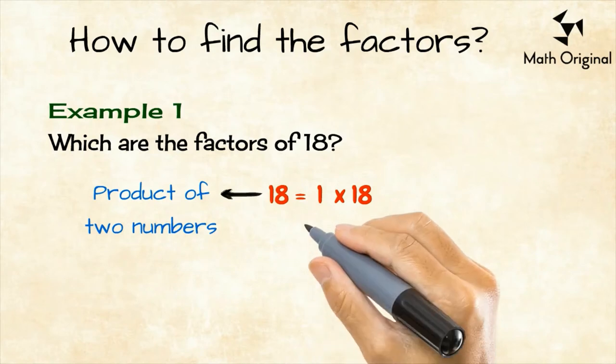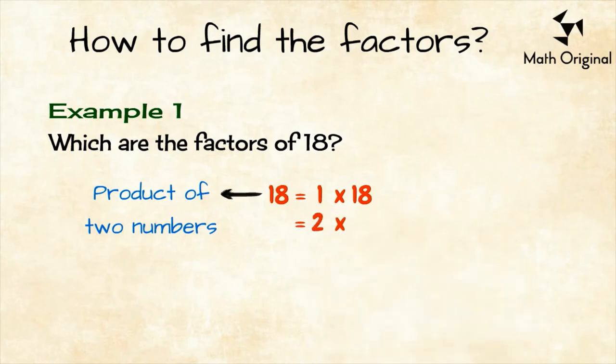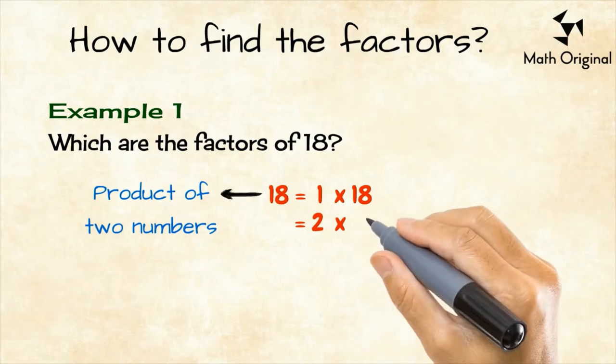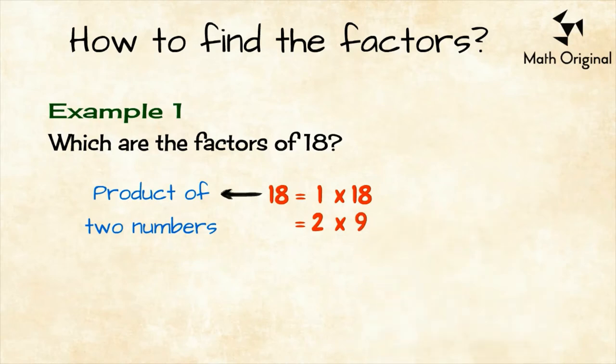Then, we move on to the other natural number and see if our number is divided by 2. When we divide 18 by 2, we get a whole number which is 9. So, we found another product, 18 equals 2 by 9.